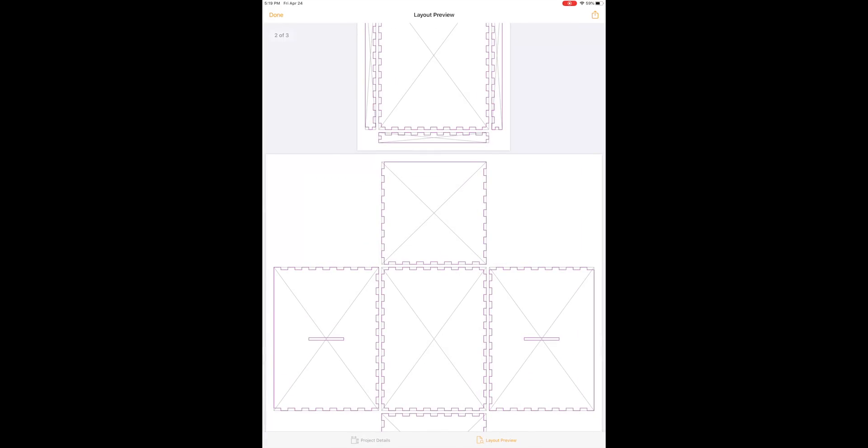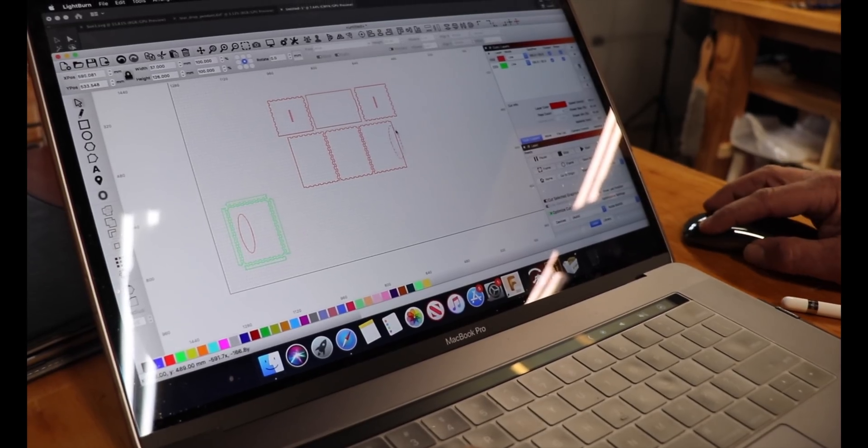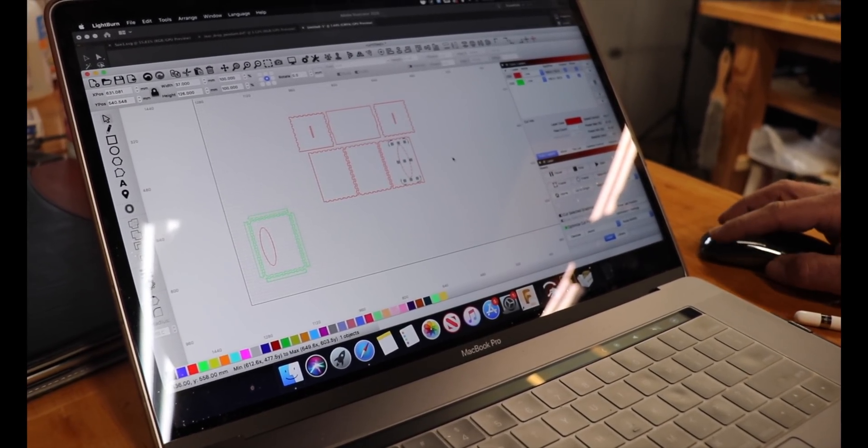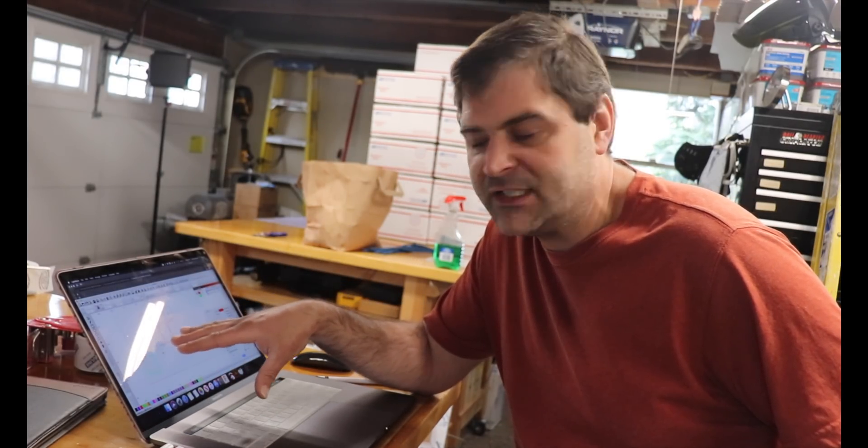It generated the SVG file for me and then I airdropped it over to Lightburn on my computer. Now that I have the design in Lightburn I just added a small cutout for the gloves to be taken out of in the lid and then I organized the pieces in a way that I think visually it'll lay out on the sheets well.